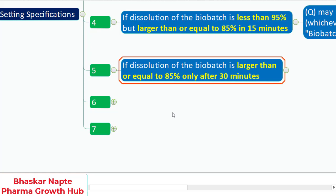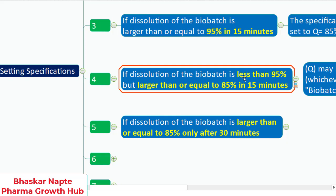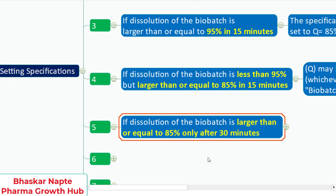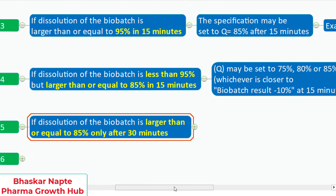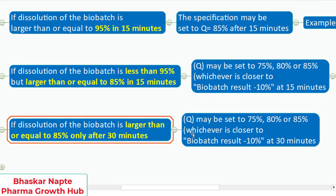Point 5: if the dissolution of the bio batch is greater than or equal to 85 percent only after 30 minutes, the release quantity Q may be set to 75, 80, or 85 percent — whichever is closer to the bio batch result minus 10 percent — at 30 minutes.